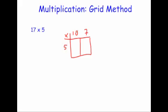So let's do 5 times 10. Well, 5 times 10 is 50, so we put 50 here. And 5 times 7 is 35, so we put 35 here. And then we just need to add these two numbers together. So we put 50 plus 35, and 0 plus 5 is 5. 5 plus 3 is 8, so the answer is equal to 85. So that is the grid method for multiplication.